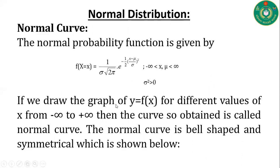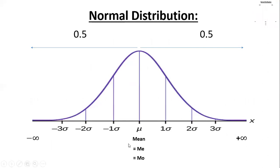Now the normal curve. The normal probability density function is given by f(x) = (1 / σ√(2π)) · e^(−½·((x−μ)/σ)²), where x ranges from minus infinity to infinity and σ² > 0. If we draw the graph of y = f(x) for different values of x from minus infinity to infinity, then the curve so obtained is called the normal curve. The normal curve is bell-shaped and symmetrical.